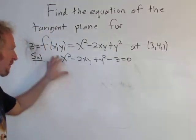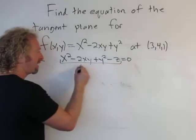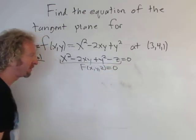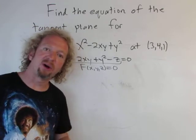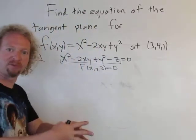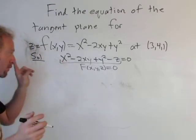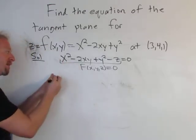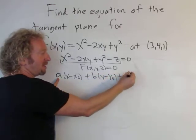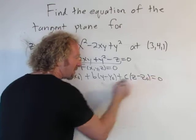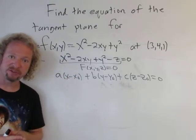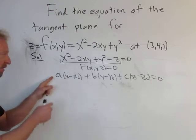Now we have a level surface — a function equal to a constant. I'm going to call this big F(x,y,z), which equals zero. The gradient vector is always normal to the level surface, so the gradient vector will serve as our normal vector for the equation of the plane.